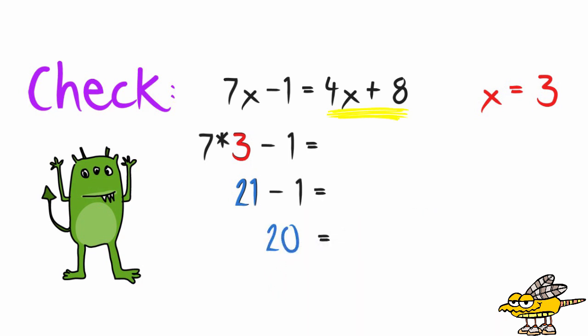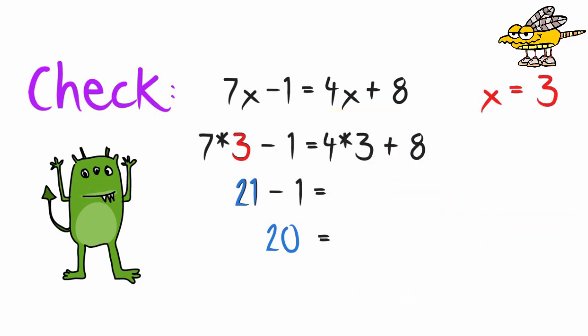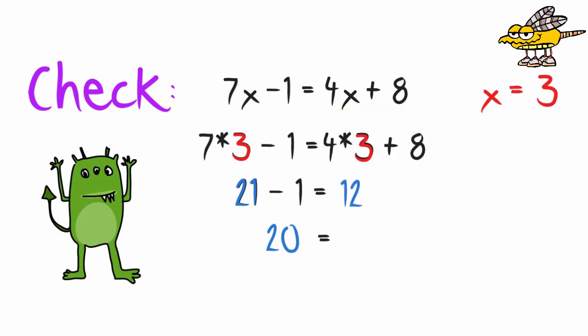And on my right side, I have 4 times x plus 8. I'm going to replace the x with a 3. So I have 4 times 3, which is 12. And 12 plus 8 is 20. My left side was 20. And my right side was 20. So replacing x with 3 led to a true statement. So my answer is correct.